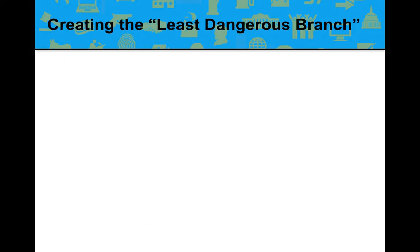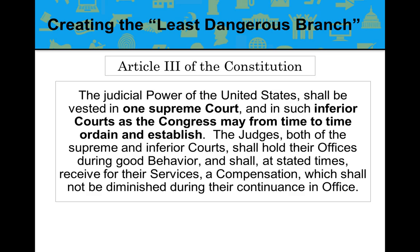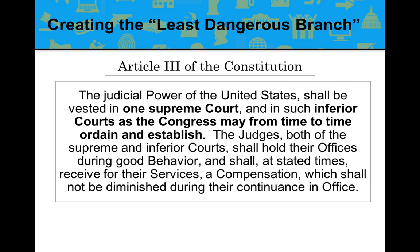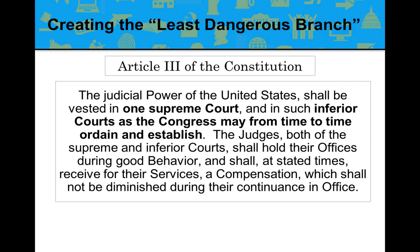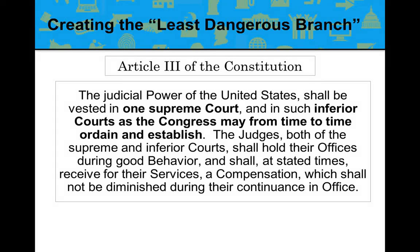One of the founding fathers described the judicial branch as the least dangerous branch of government. The creation of the judiciary is found in Article 3 of the Constitution, which states: 'The judicial power of the United States shall be vested in one Supreme Court and in such inferior courts as the Congress may from time to time ordain and establish.' The Constitution only provides for one court — the U.S. Supreme Court — and all other courts are created by Congress.